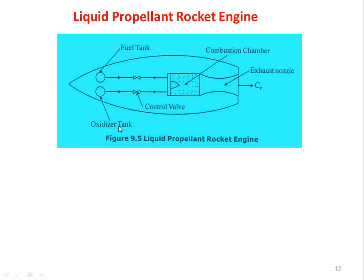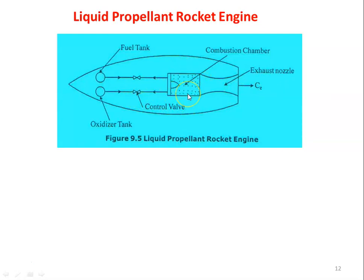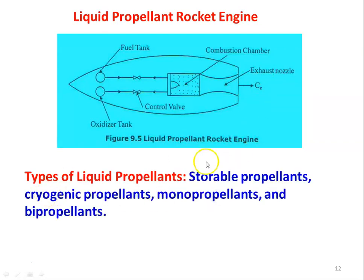The liquid propellant rocket engine has a fuel tank and oxidizer tank at the front. A pipeline carries the fuel and oxidizer to the thrust chamber or combustion chamber. A control valve regulates the amount of oxidizer and fuel required for combustion based on velocity requirements. In the combustion chamber, combustion takes place, hot gases are produced, and the hot gases are expanded through the exhaust nozzle to produce a high-velocity jet. There are different types of liquid propellants: storable propellant, cryogenic propellant, monopropellant, and bipropellants.